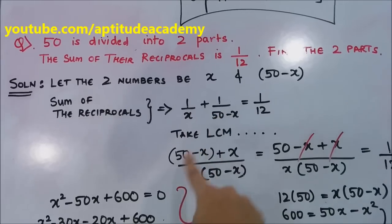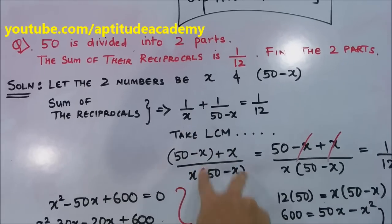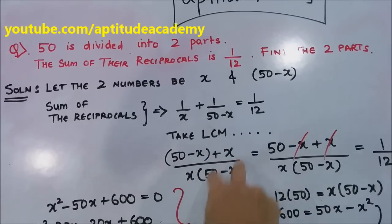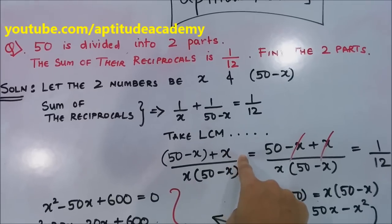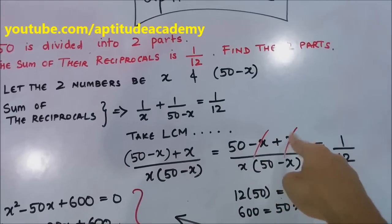You take the LCM on the left-hand side, you will get x(50-x). If you divide this by x, you will get 50-x. And if you divide this by 50-x, you will get plus x. So 50-x plus x, they get cancelled.